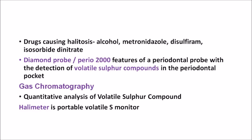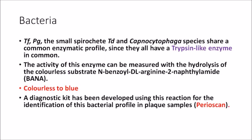For bacterial detection: Tannerella forsythia, P. gingivalis, Treponema denticola, and Capnocytophaga all share a common enzymatic profile — they all have a trypsin-like enzyme. By detecting this enzyme we can identify the presence of these bacteria. The enzyme activity is measured by hydrolysis of a colorless substrate called BANA — N-benzoyl-DL-arginine-2-naphthylamide. The trypsin-like enzyme acts on BANA to produce beta-naphthylamine, which reacts with a diazo dye impregnated in the test kit, producing a blue color — so colorless to blue is the reaction.